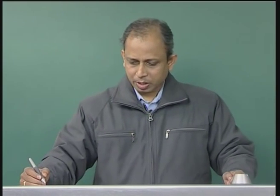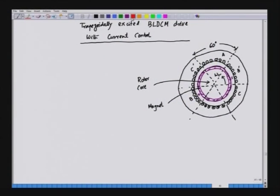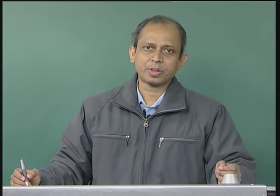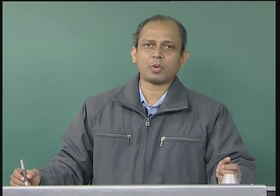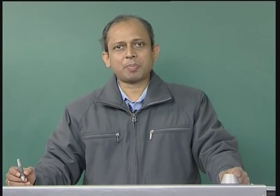Let us see an example of a trapezoidal motor. This is the view of a trapezoidal motor and here we have three-phase distributed winding. The windings are phase A, phase B, and phase C, positioned in space 120 degrees apart. Phase B is shifted from phase A by 120 degrees and phase C shifted from phase B by 120 degrees. These are distributed windings, meaning the windings are placed in slots.